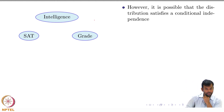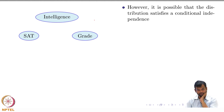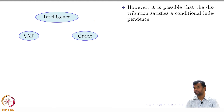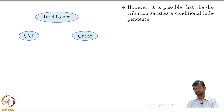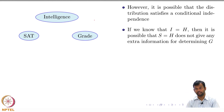However, it is possible that the distribution satisfies a conditional independence. The natural possibility is: can I say that grade is independent of SAT score given intelligence? If you are given that the person is intelligent, knowing their SAT score is not going to give you any more information about their grade.